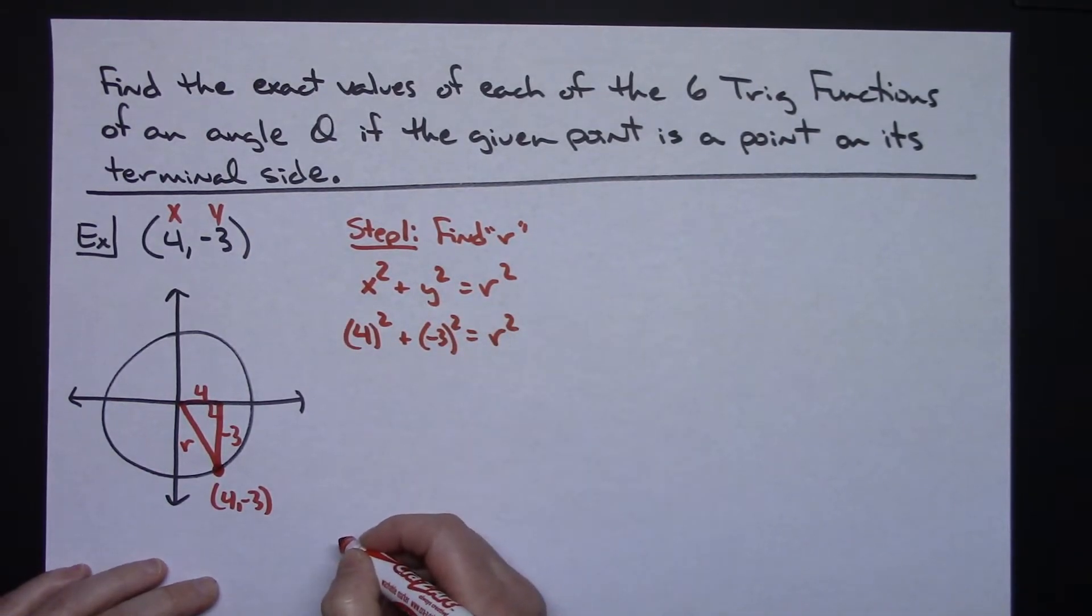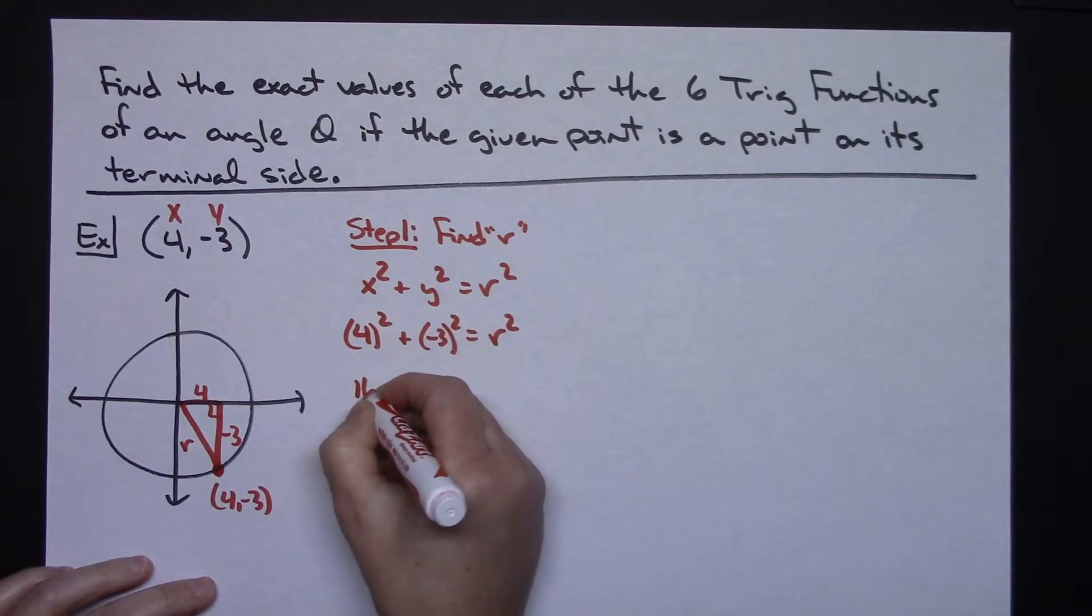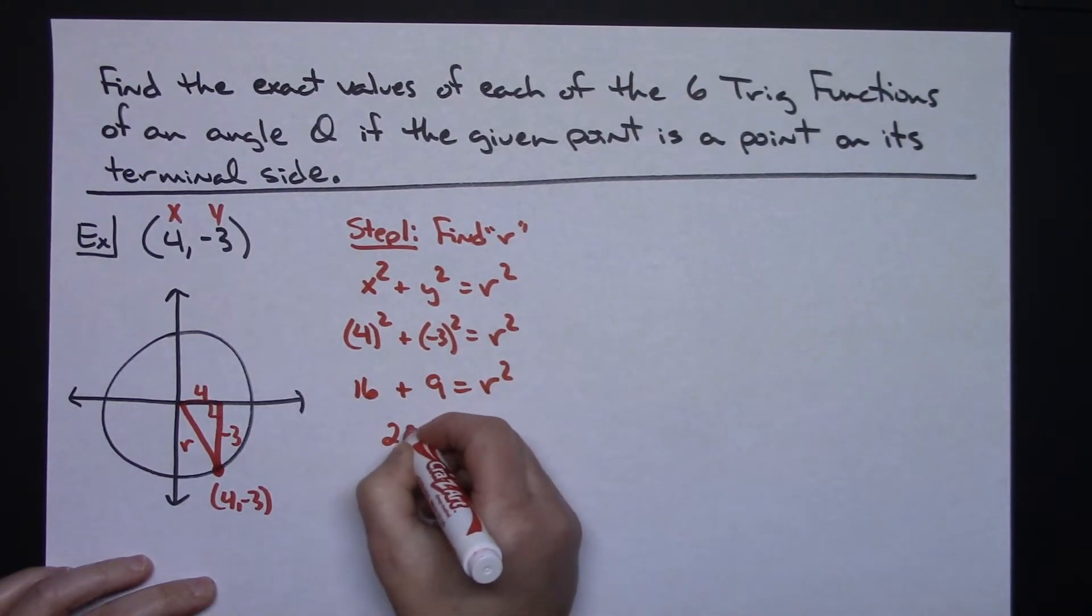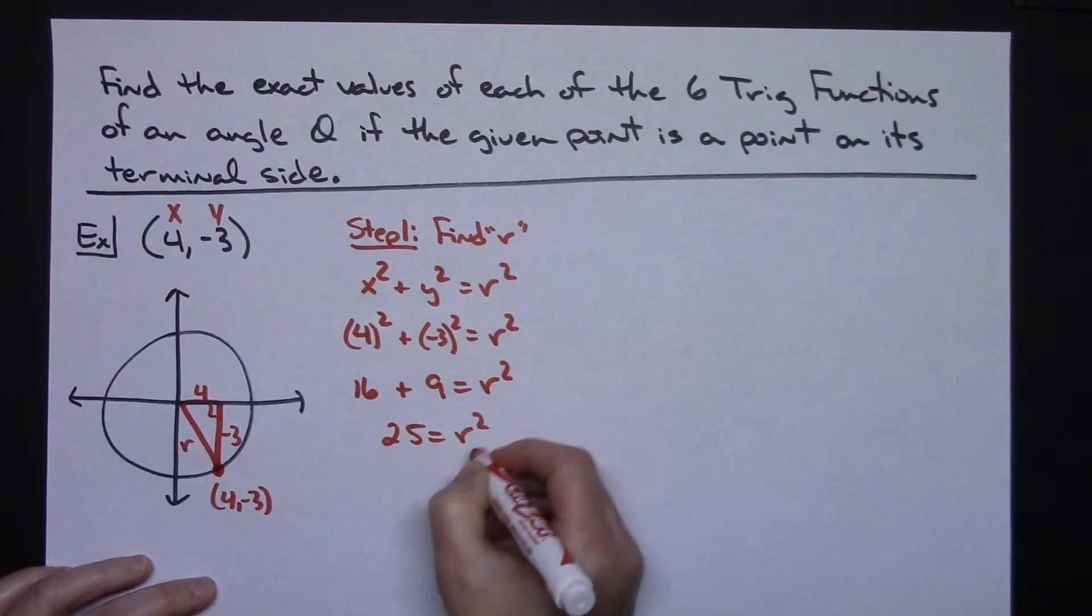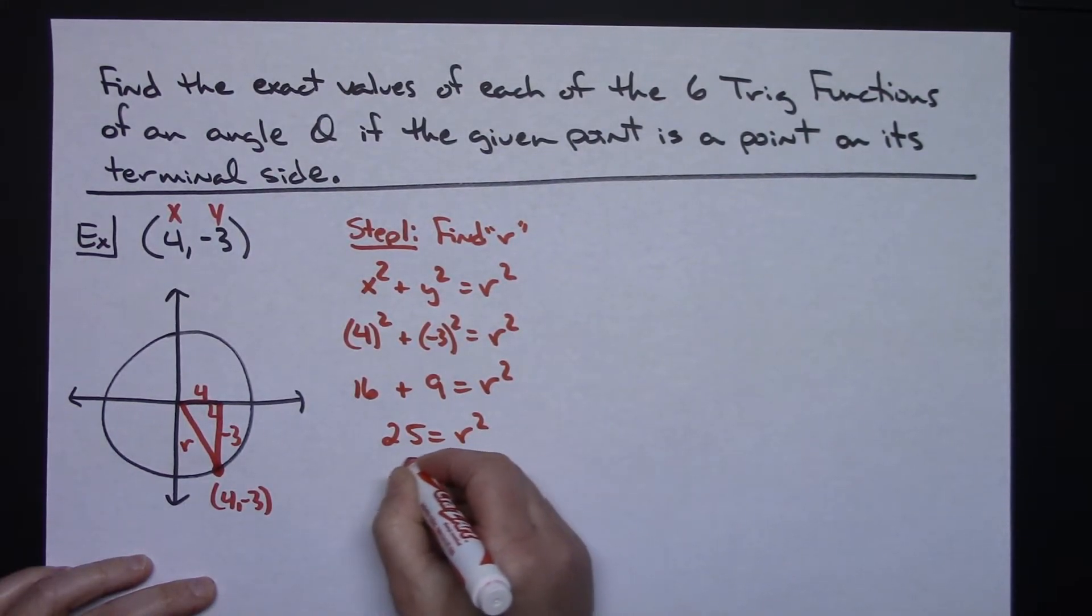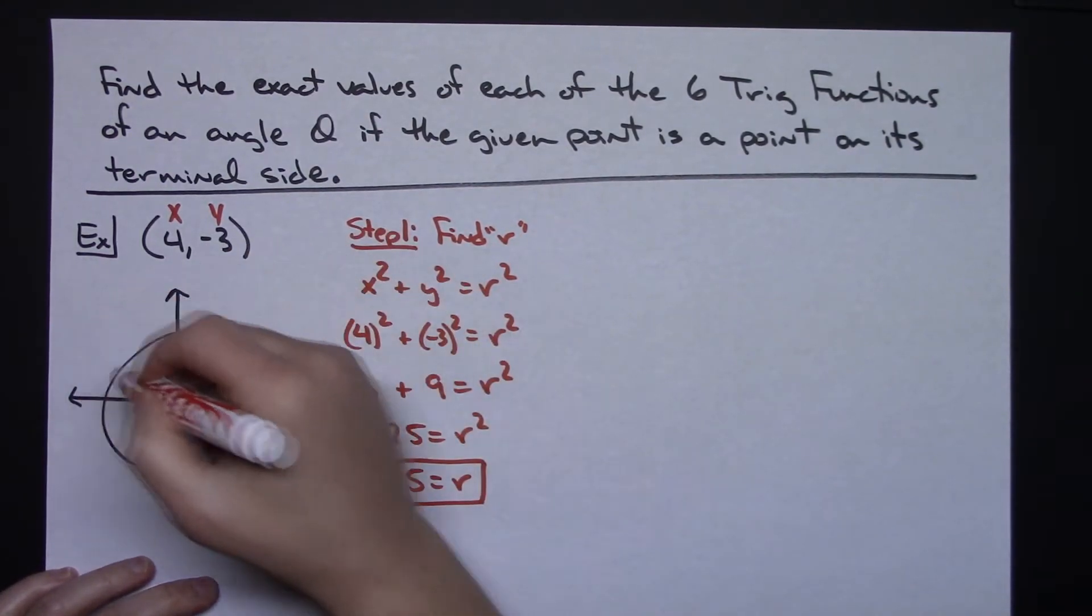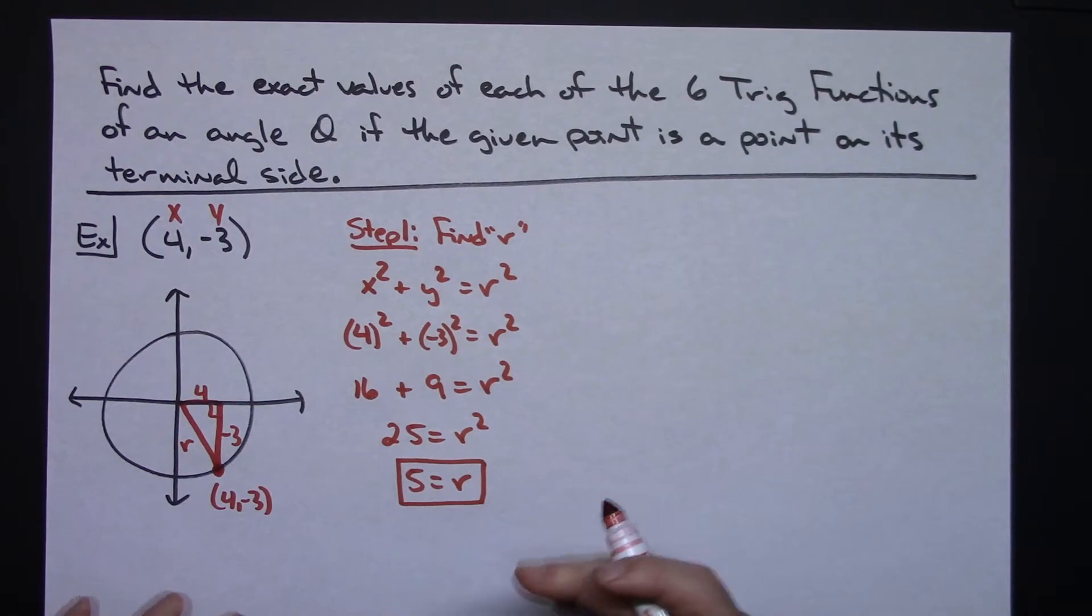And it's a matter of working out the Pythagorean theorem here. I'm going to have 16 plus 9 equals r squared. So 25 equals r squared. That means the radius is 5. And if you know your Pythagorean triples really well, 3, 4, 5 is a Pythagorean triple. So you might have been able to get that without actually doing the math.